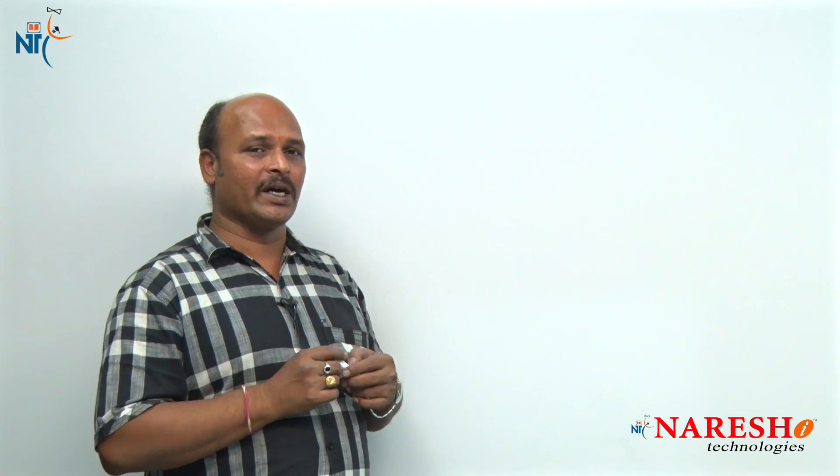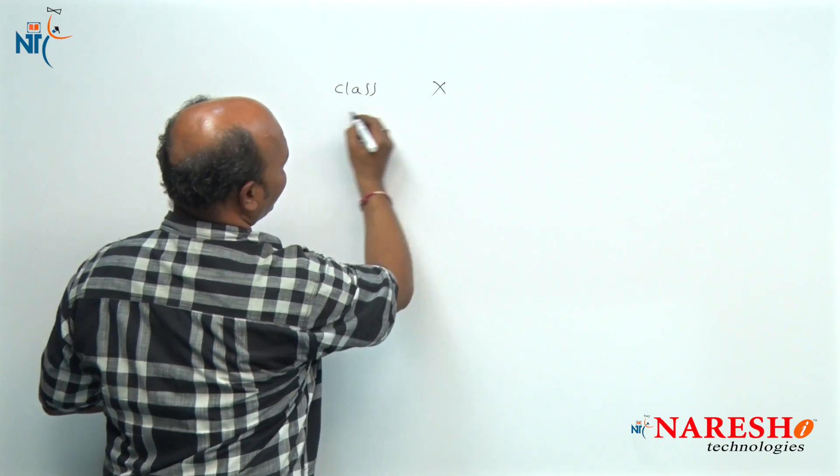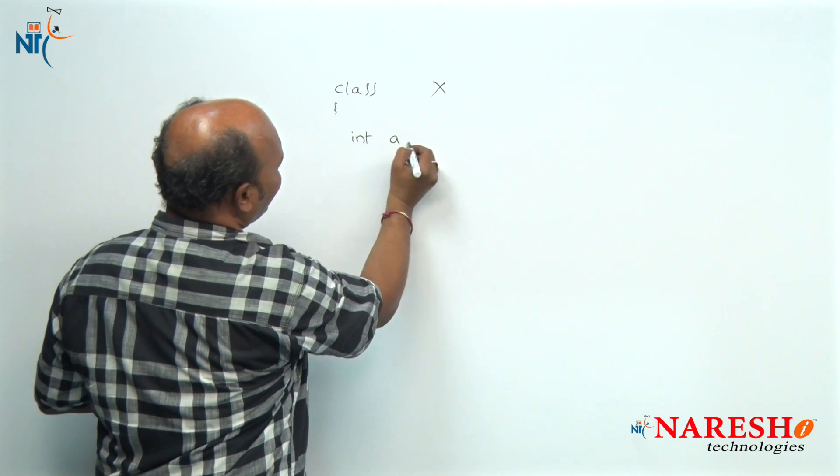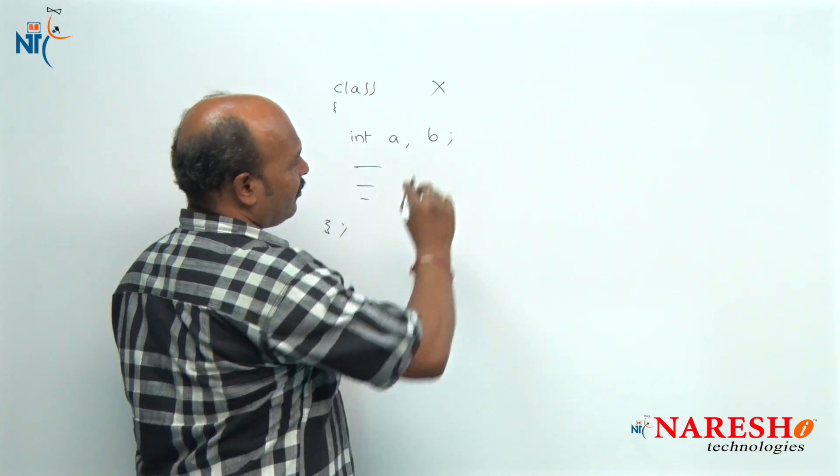Now, when inheritance is conducted, what happens inside? When inheritance happens, memory is allocated for the base class data members as well. That means when the derived class object is created, memory is allocated for both the base class data members and the derived class members. For example, I am going to declare class X with integer data members i, a, and b — these are data members and member functions.